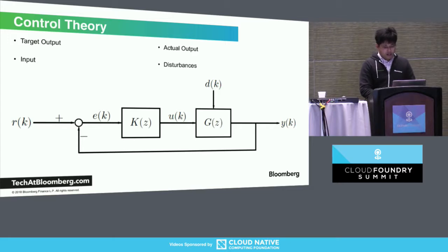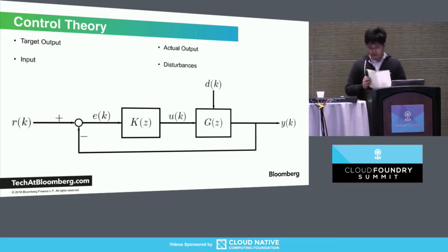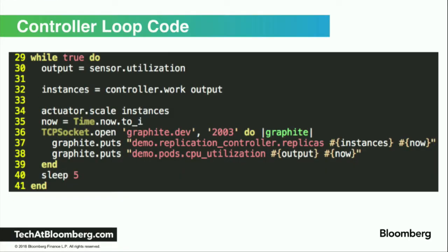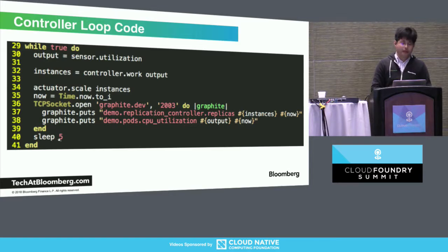For our application, a fourth component is added: a disturbance. Web traffic is actually modeled as noise — it's noise that changes your output, your CPU utilization. In this example autoscaler, you have a sensor that gets your CPU utilization as the output, you put that in your controller to get the number of instances, and in control theory textbooks they call the execution component an actuator — basically the thing that runs CF scale. I also added monitoring to Graphite and an interval on when to run the autoscaling loop.